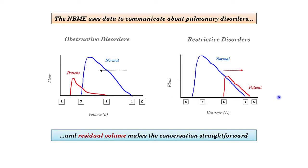The NBME will use data to communicate about pulmonary disorders, and the interpretation of these curves is rendered simple if you just focus on the residual volume. The patient's flow-volume loop moved toward lower volumes, which made this a restrictive curve. Compare and contrast that with obstructive disorders, where the residual volume increases, moving the curve to the left. That increase in residual volume is characteristic of obstructive disorders. Based upon interpretation of residual volume alone, we were able to classify this disorder.